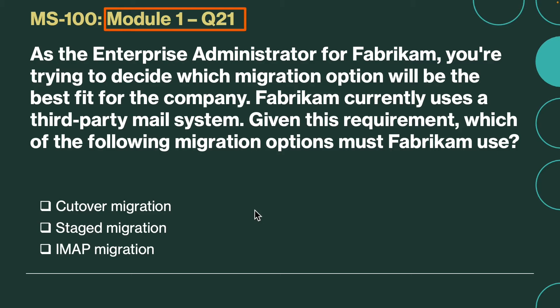Question number 21. As the enterprise administrator for Fabricum, you are trying to decide which migration option will be the best fit for the company. Fabricum currently uses a third-party mail system. Given this requirement, which of the following migration options must Fabricum use? Is it Cutover, Staged, or IMAP? The correct answer is IMAP migration. If you currently run a third-party mail system, you can only use IMAP or third-party tools as migration options.